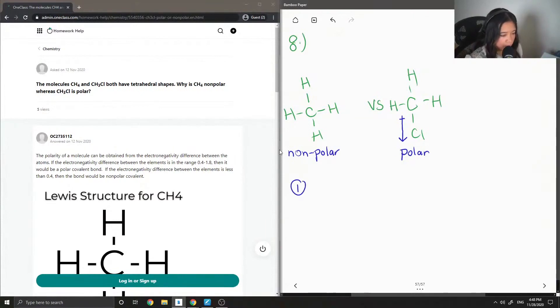Okay, so chlorine is more electronegative and its dipole moment is not cancelled out.